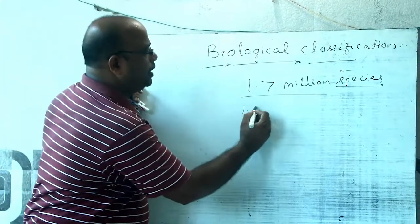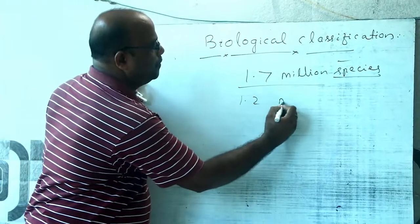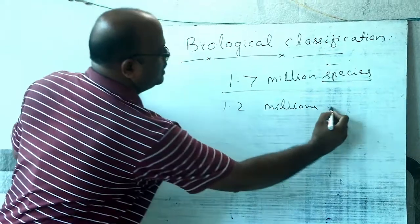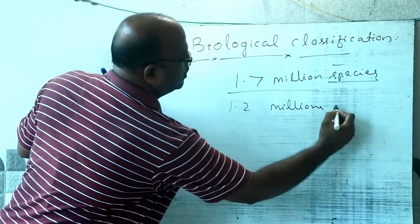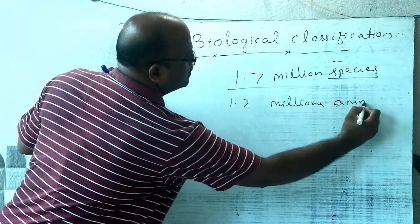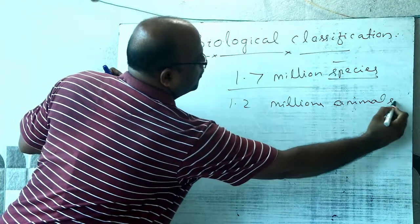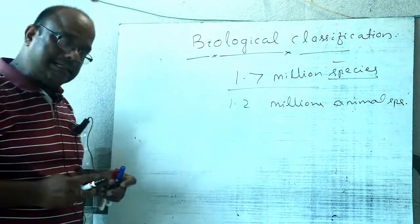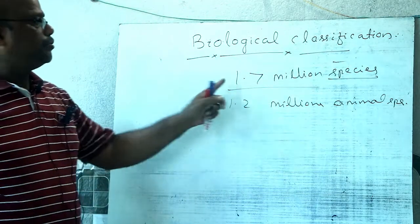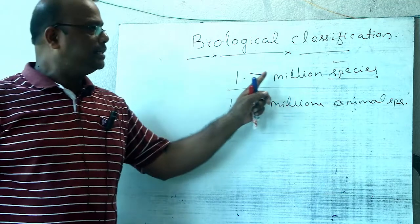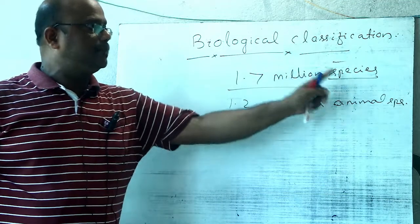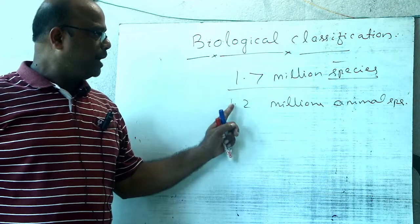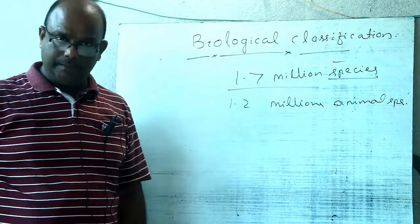Of the 1.7 million species of organisms that occur in nature, 1.2 million species are animal species. The other species are plants and microbes. There are 1.2 million, that is 12 lakh, animal species occurring in nature.